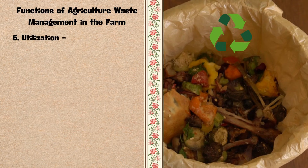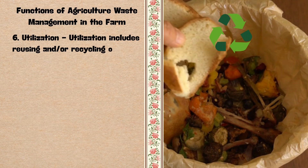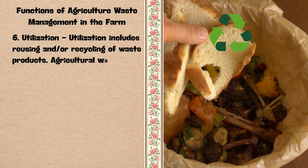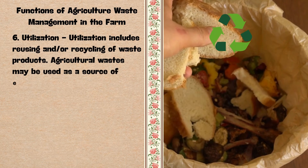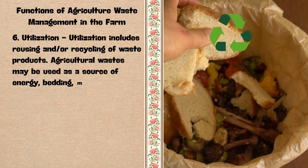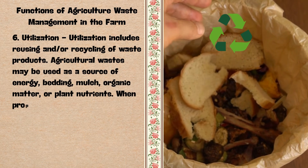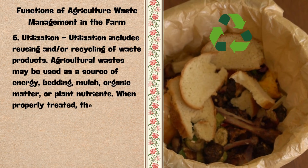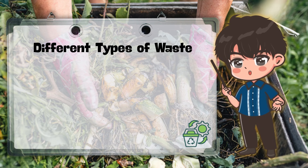6. Utilization — it includes reusing and/or recycling of waste products. Agricultural wastes may be used as a source of energy, bedding, mulch, organic matter, or plant nutrients. When properly treated, they can be marketable. Here are the different types of waste.